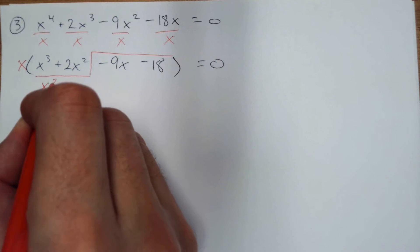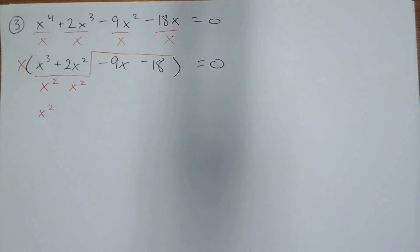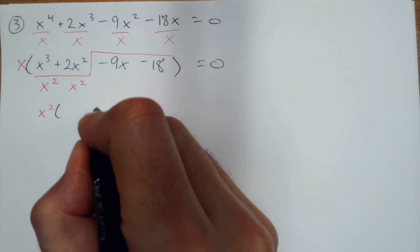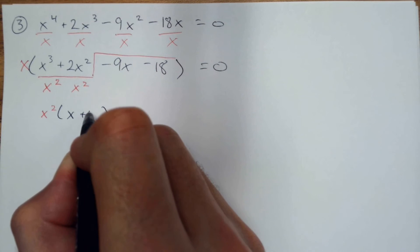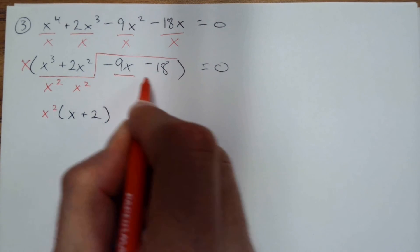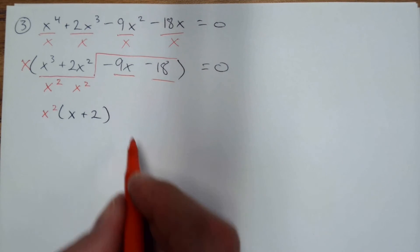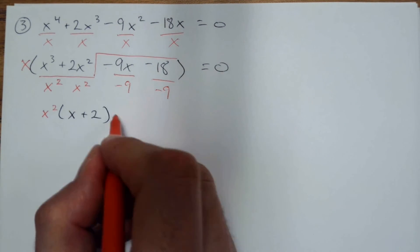So x squared I can divide by. Whatever I divide by goes on the outside of the parentheses. I'm left with x plus 2. And then here I can divide by negative 9. Whenever the first term is negative, I divide by negative.